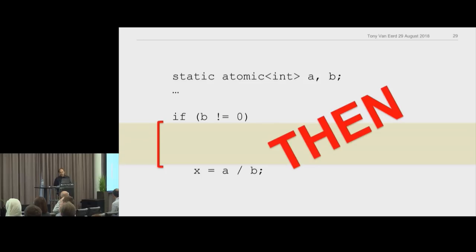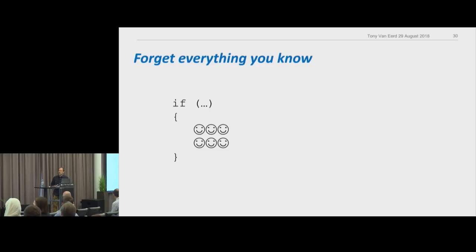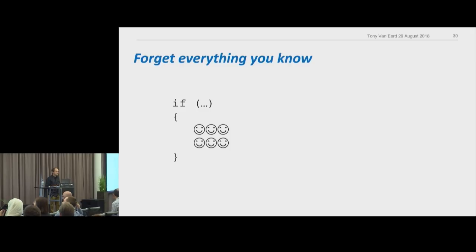The word 'then' — 'if then' — is like a four-letter word in lock-free programming and threading in general. It's simple but fundamental: we're so used to typing if statements and then assuming we know what the world looks like inside that if. The only trick to lock-free programming is forgetting everything you know, because things like that aren't true anymore.